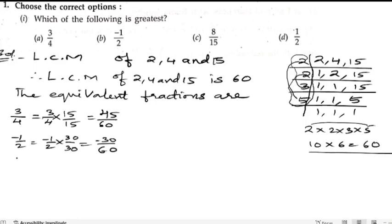Next is 8/15. 8/15, so 15 needs to be multiplied with 4. So 4 times 8 are 32 by 15 times 4 are 60. Next is 1/2. So 1/2 should be multiplied with 30. 30 by 60. So 30 times 1 are 30 by 2 times 30 are 60.